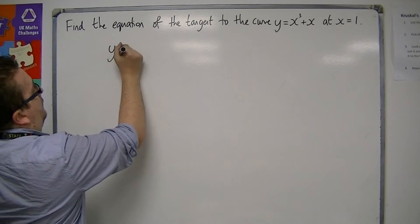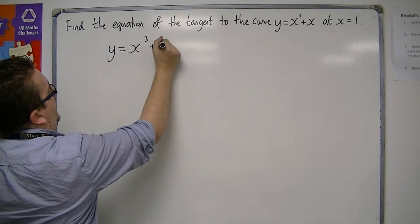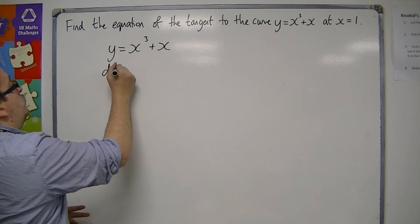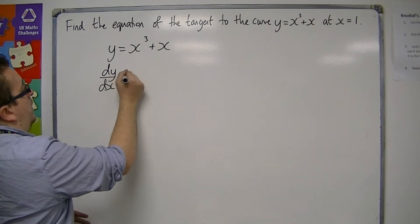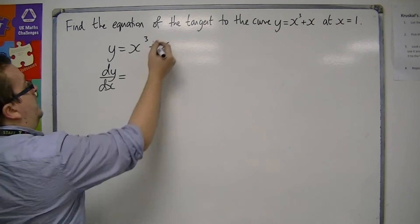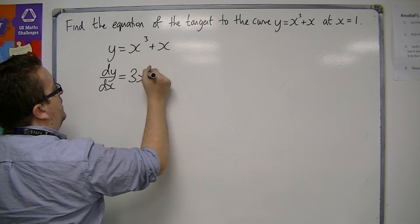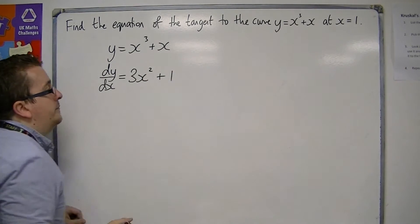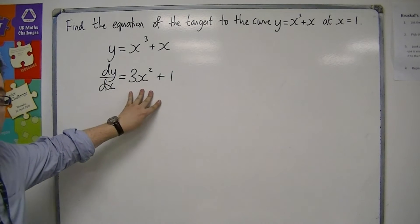So we start off with y equals x cubed plus x, and we differentiate it in order to find the gradient function. So this will tell me the gradient, the general gradient function for all the tangents. So the 3 comes down to the front, take 1 off the power, and x differentiates to 1. So this is the gradient function.